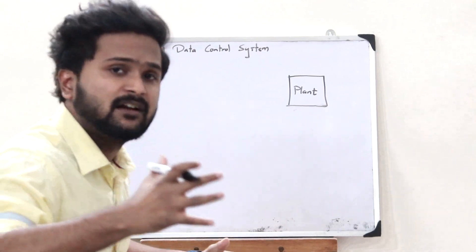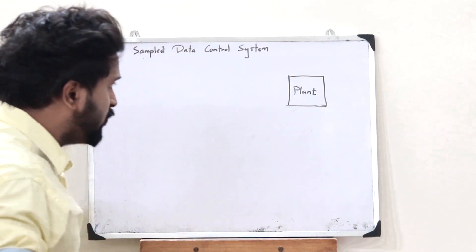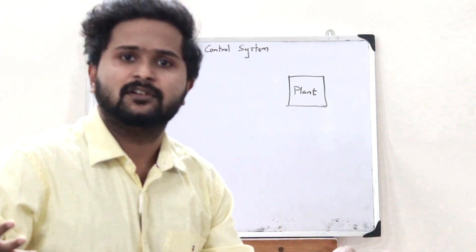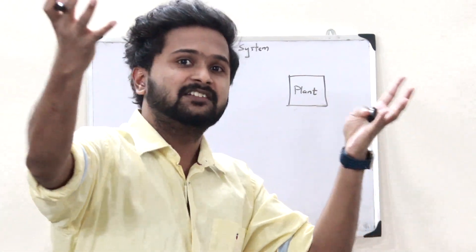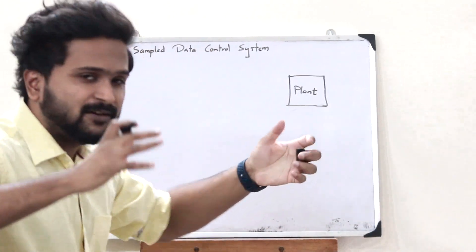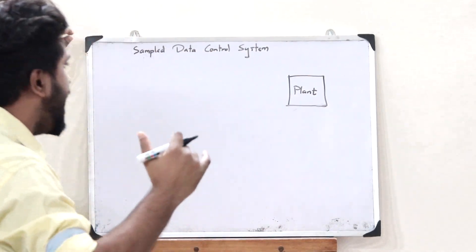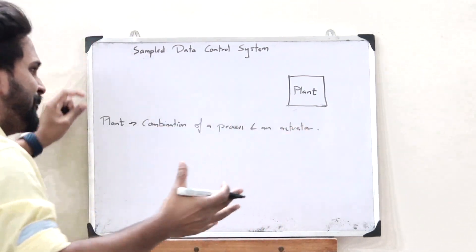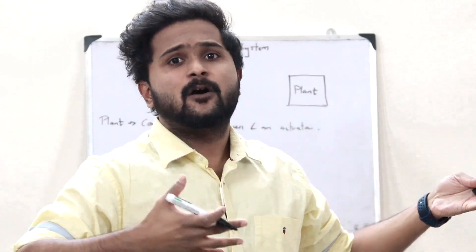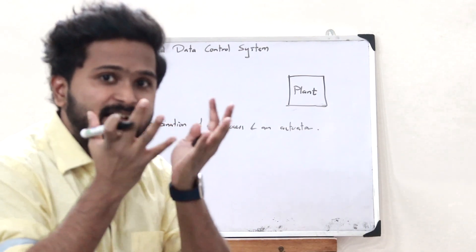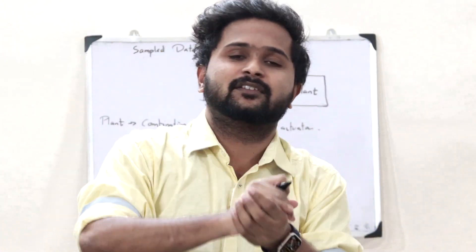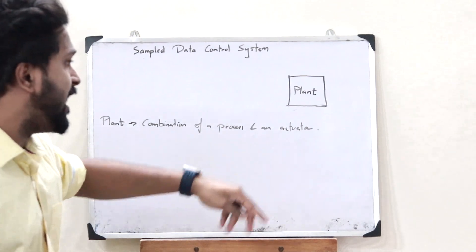Let us take the example of an air conditioner. Here, the plant has a process to do — that is, condition the air. That is the process this plant has to do, and it has an actuator for the purpose of actually conditioning this air. An actuator is simply any device that converts an electrical signal into a mechanical motion. Here, in the case of an air conditioner, when we give an electrical signal, this actuator conditions the air present around us.